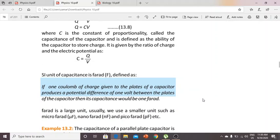C is the constant of proportionality called the capacitance of the capacitor, defined as the ability of the capacitor to store charge. It is given by the ratio of charge to electric potential: C equals Q divided by V.